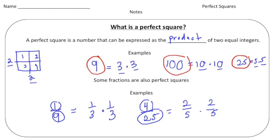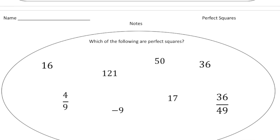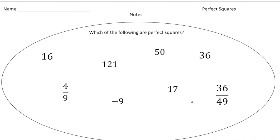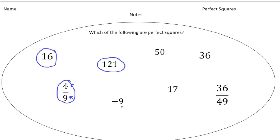Let's turn the page and identify which of these are perfect squares. Sixteen: four times four is sixteen, so yes. Four-ninths: four is a perfect square and nine is a perfect square, so that's two-thirds times two-thirds — yes. One hundred twenty-one: eleven times eleven is one twenty-one — perfect square. Negative nine is not a perfect square, because three times negative three does not give us a perfect square.